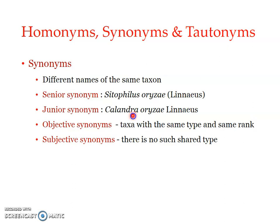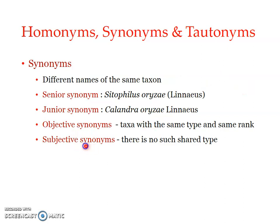There is a further division of synonyms into objective synonyms and subjective synonyms. Objective synonyms are taxa with the same type specimen and same rank. Subjective synonyms are based on different type specimens — for example, if Linnaeus used one specimen when naming Sitophilus oryzae, but a different specimen was used when assigning another name, those constitute subjective synonyms.